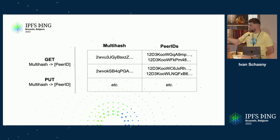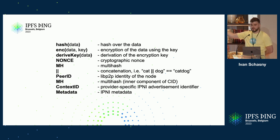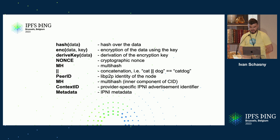With reader privacy implemented, we don't want IPNI or a passive observer spying on traffic to understand what we're looking for. Before going forward, here's the notation: hash(data) means hashing over data; encryption with a derived key means the data is encrypted with a cryptographically derived key; nonce is a cryptographic nonce; MH stands for multihash; double pipe means concatenation; period is the libp2p identity of the provider; and context ID is the provider-specific identifier.